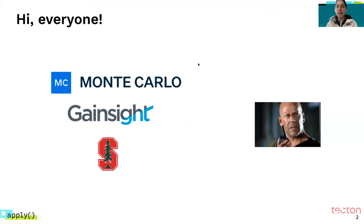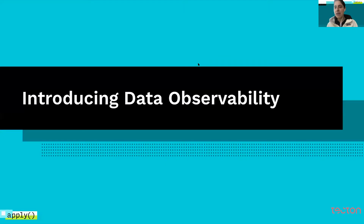Just a little bit about myself. My name is Barr, and I'm the founder and CEO of Monte Carlo, a data reliability company. We help companies trust their data by minimizing what we call data downtime. Before founding Monte Carlo, I served as VP at Gainsight, the customer data company. My background is in math and stats, and I'm a huge fan of Bruce Willis movies. So now that we've gotten the important things out of the way, let's talk about data observability.